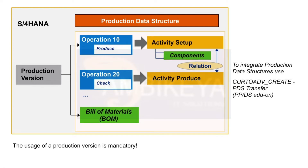In addition to BOM components, you can also assign production resources or tools in the routing. Production resources or tools are operating facilities that are not bound to location but are necessary for production, such as a measuring instrument or a support.